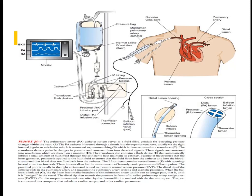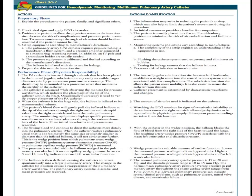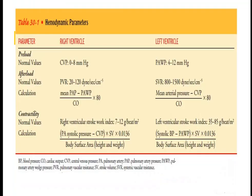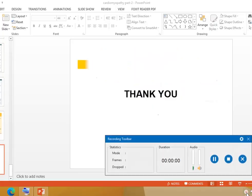Hemodynamic monitoring uses the pulmonary artery catheter. Nursing actions include knowing the normal values: preload — CVP is 0 to 8 mmHg; afterload — normal value is 20 to 120 dynes. These hemodynamic parameters help assess the overall abnormality and function of the heart.